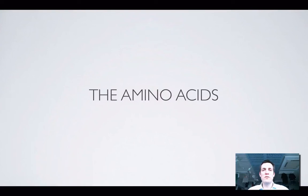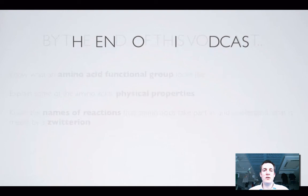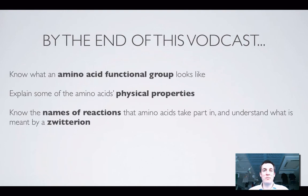Hello and welcome to this film which is all about amino acids — the last functional group we need to look at in the Year 12 chemistry course. By the end of this film you'll know what an amino acid looks like, be able to explain some of its physical properties, name some reactions that amino acids take part in, and understand what we mean by something called a zwitterion.